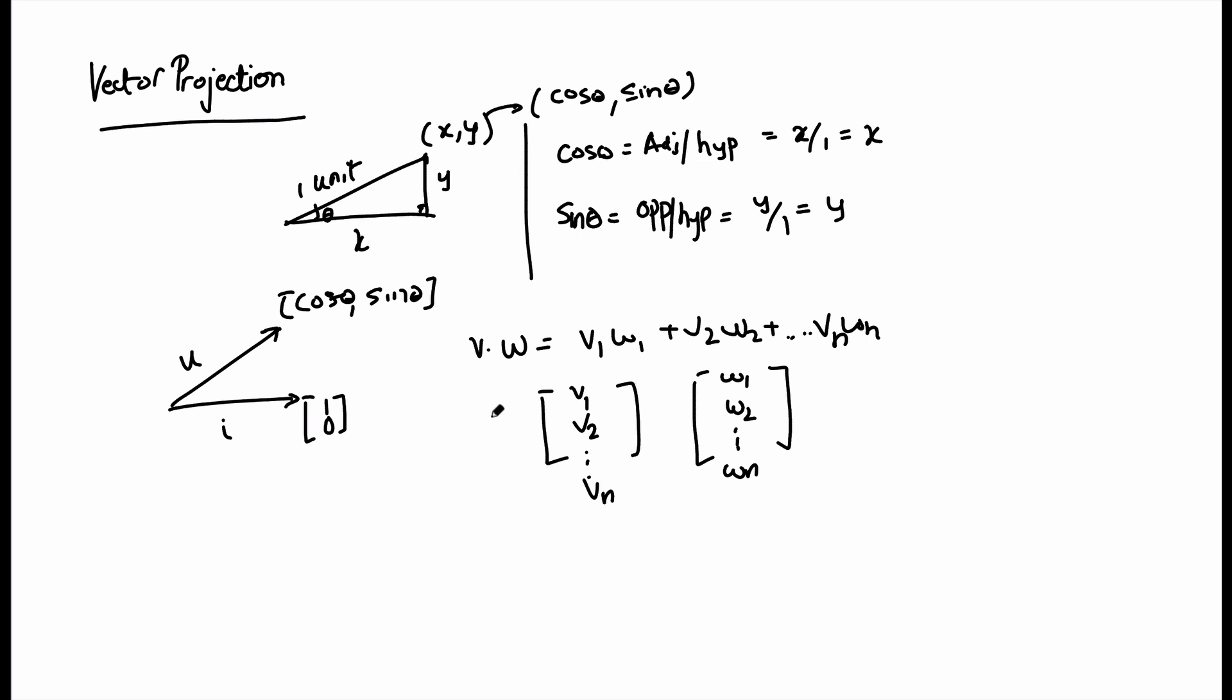If you take this example and multiply the unit vectors u and i, we're going to get cos theta multiply that by 1, plus I'll have sine theta and I'm going to multiply that by 0. Of course anything multiplied by 0 is 0, so what we're left with is cosine theta. So u dot i, these two unit vectors when multiplied, dot product of these two unit vectors is equal to cosine of theta.